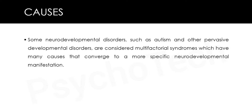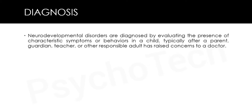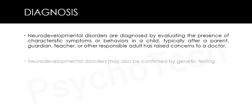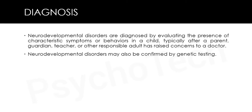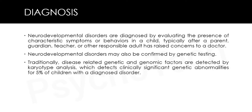Neurodevelopmental disorders are diagnosed by evaluating the presence of characteristic symptoms and behaviors in a child, typically after a parent, guardian, teacher or other responsible adult has raised concerns to a doctor. Neurodevelopmental disorders may also be confirmed by genetic testing. Traditionally, disease-related genetic factors are detected by karyotype analysis, which detects clinically significant genetic abnormalities in about five percent of children with a diagnosed disorder.